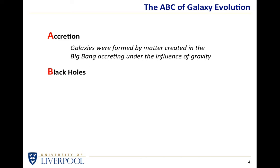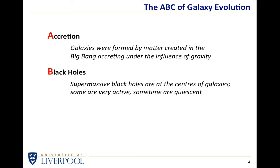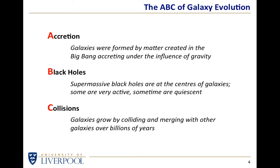B is for black holes, because as far as we can tell, most if not all galaxies have a black hole at the centre. Some of these black holes appear to be feeding — material is falling in and producing energy. Some are quiescent, like the one at the centre of our Milky Way galaxy. And C stands for collisions, because galaxies grow by collisions and mergers with other galaxies over many billions of years. So we're going to look at the A, the B, and the C.